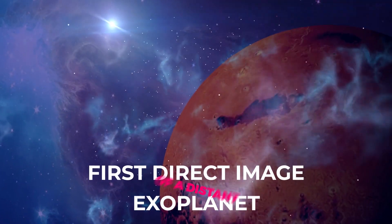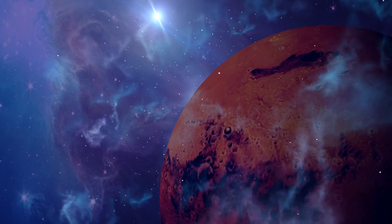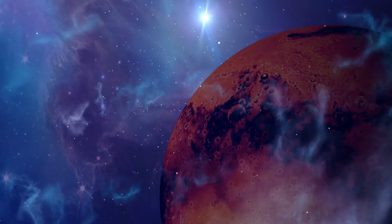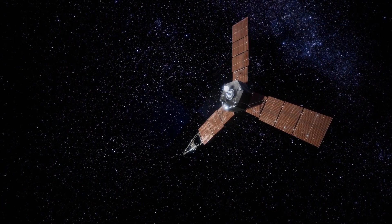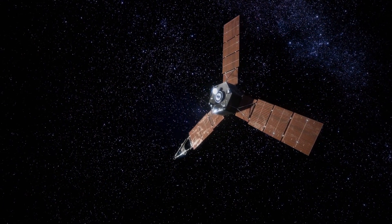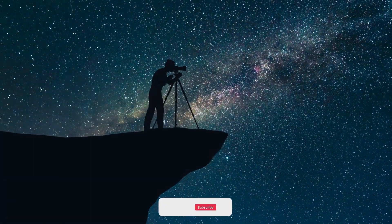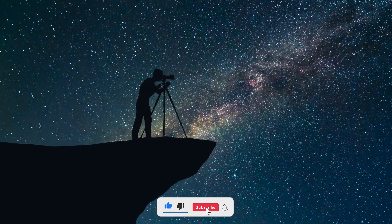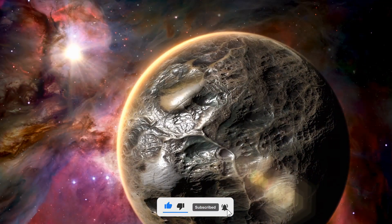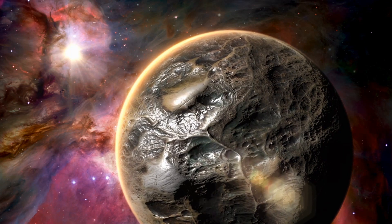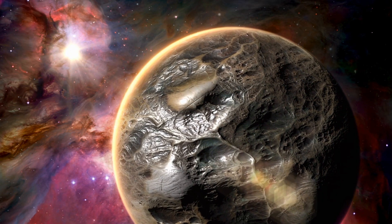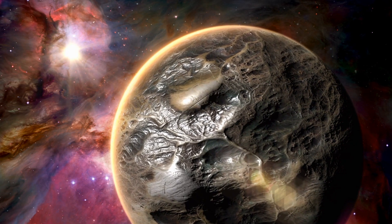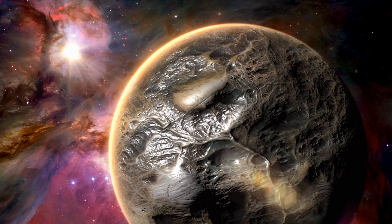First direct image of a distant exoplanet. NASA has also released unprecedented observations of a planet outside our solar system, making use of the James Webb Telescope's powerful infrared gaze to reveal new details that ground-based telescopes would not be able to detect. The image of exoplanet HIP-65426b, a gas giant about 6 to 12 times the mass of Jupiter, is the first time the Webb Telescope has taken a direct image of a planet beyond the solar system.